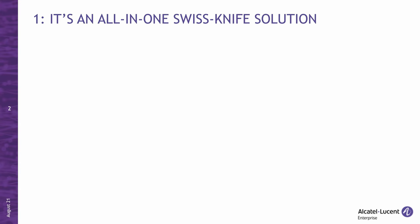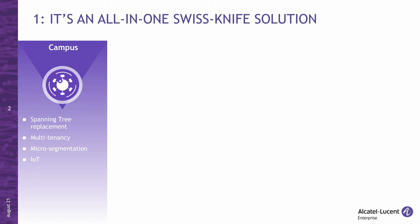Number one: the first thing to know about SPB is that it's an all-in-one Swiss knife solution. What that means is that you can tackle different problems with it. You can use it in the campus, and in fact SPB was first conceived as a replacement for spanning tree.